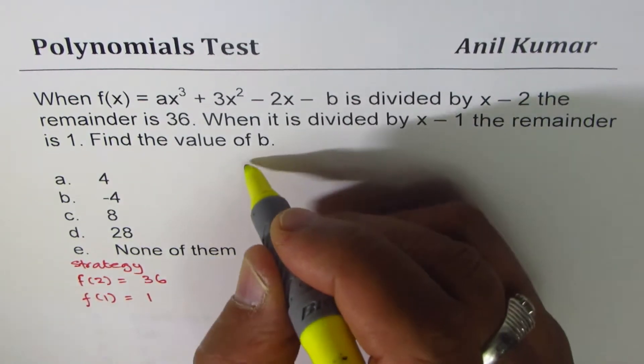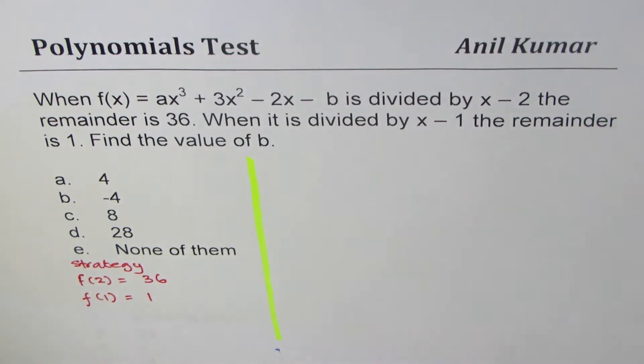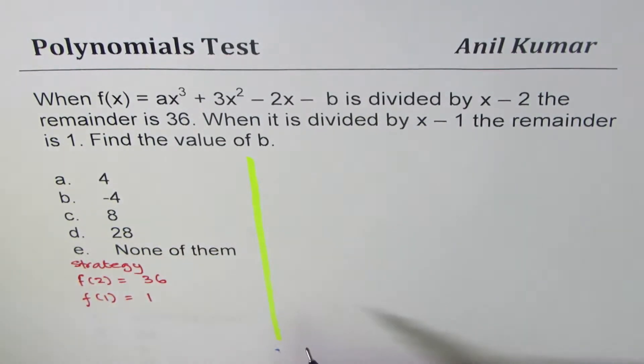Now we'll substitute 2 and 1 in the equations. We'll get 2 equations. There are 2 unknowns, a and b. We'll find them, and then we'll know the answer.